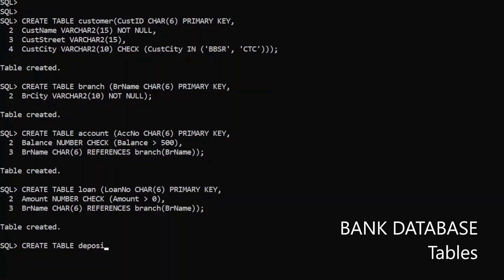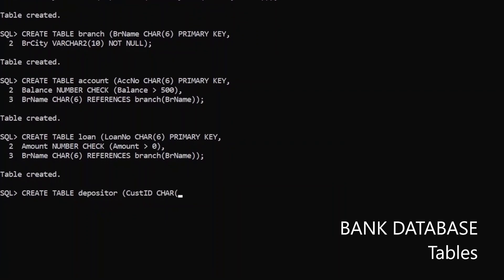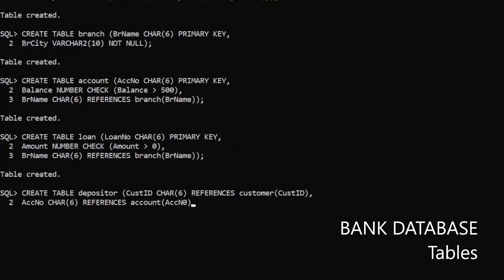The next table is called depositor. It consists of customer ID, which references customer ID of the customer table, and account number, which is also a foreign key referencing the primary key account number of the account table. Both account number and customer ID are the foreign keys in depositor, but collectively they define the primary key. We write: primary key (customer ID, account number). Table is created.